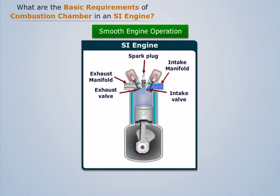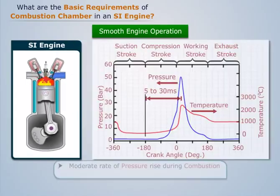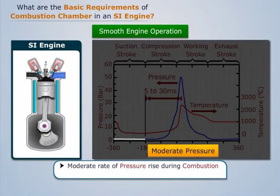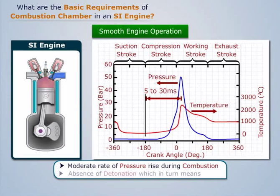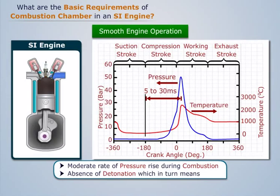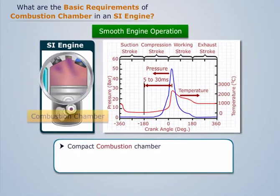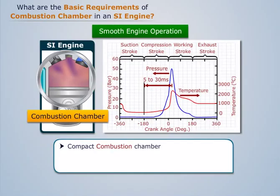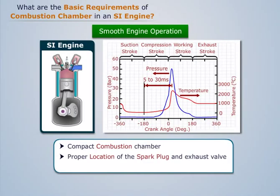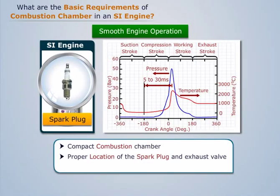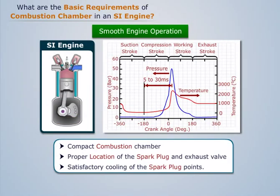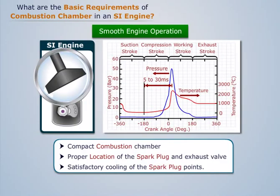Smooth engine operation requires the following: a moderate rate of pressure rise during combustion, and absence of detonation — which in turn requires a compact combustion chamber and a short distance of flame travel from the sparking plug to the farthest point in the combustion space. Proper location of the spark plug and exhaust valve is also necessary, along with satisfactory cooling of the spark plug points to avoid pre-ignition, and cooling of the exhaust valve head, which is the hottest region of the combustion chamber.